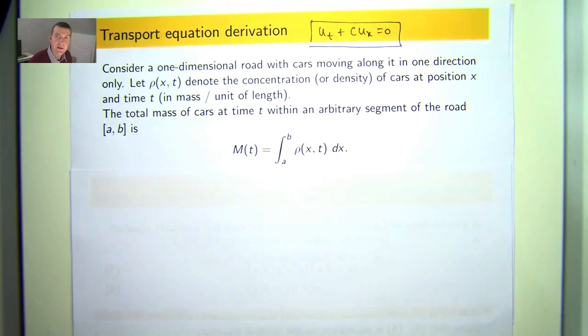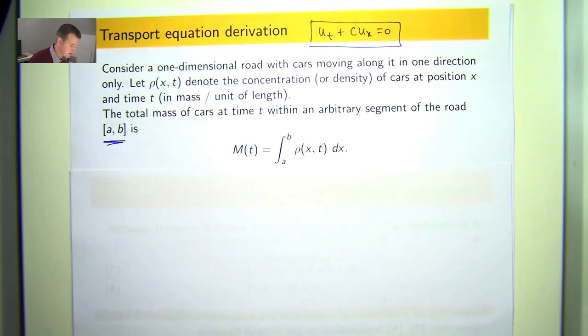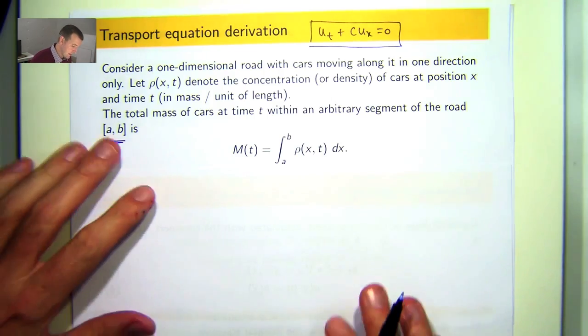Now, the total mass of cars at some point in time t within an arbitrary segment of the road, just an interval, say a comma b, is the following.